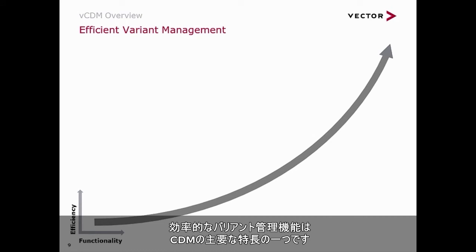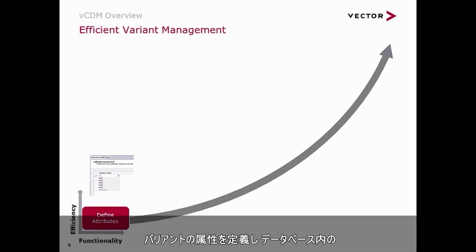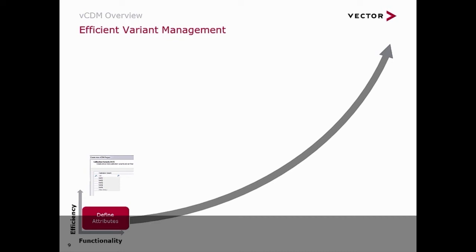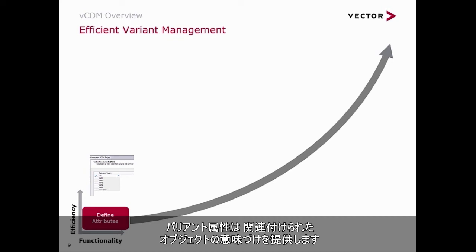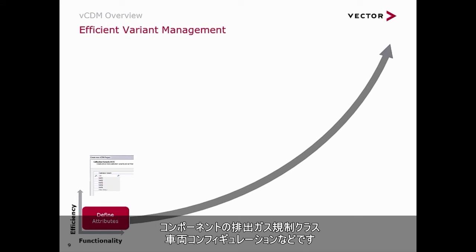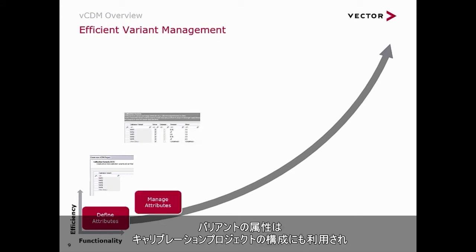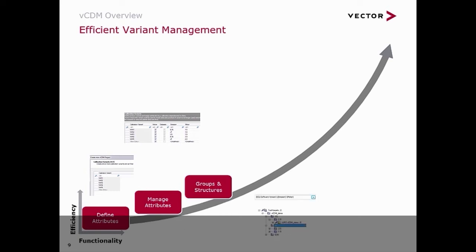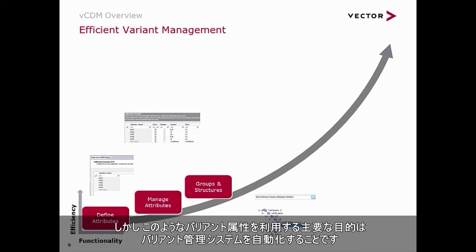Efficient variant management is one of VCDM's core strengths. Attributes can be defined and assigned to every object in the database — projects, datasets, components, and so on. Attributes provide intelligence on the associated object, for instance the displacement of an engine, the emission class of a component, or the configuration of a vehicle. Attributes can be used to structure calibration projects and provide useful site information in the user interface. However, the primary purpose of these attributes is for automated variant management systems.